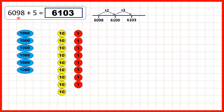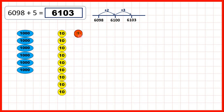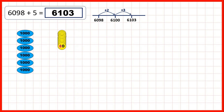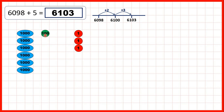Then add 3, 4, 5, and you can see that we now have — because we've exchanged — 6 thousands, 1 hundred, no tens, and 3 ones. Or, showing place value counters instead, we start with 6,098. We can add 1, 2, exchange, exchange again, then add 3, 4, 5, to give us 6,103.